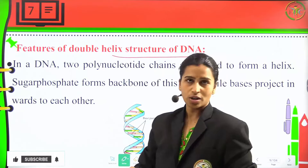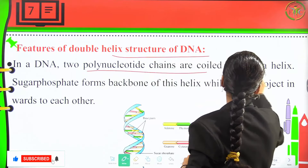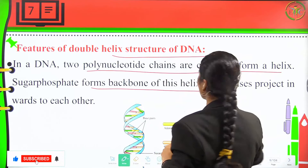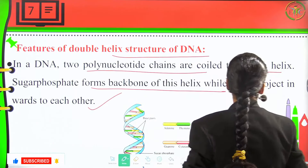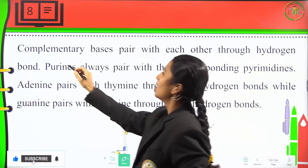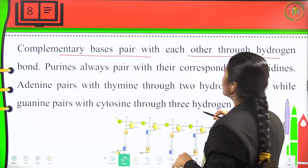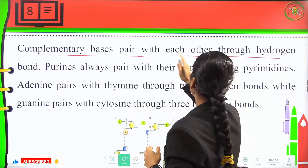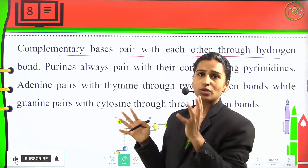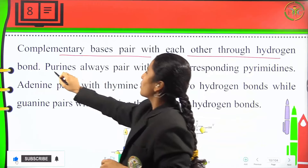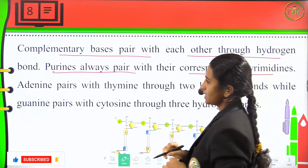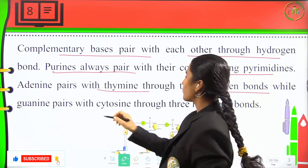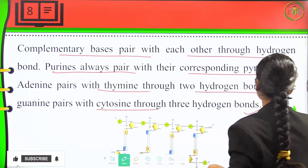Features of the double helix structure: in DNA, two polynucleotide chains are coiled to form a helix. The sugar-phosphate backbone forms the helix while bases project inwards toward each other. Complementary base pairs form through hydrogen bonds. Purines always pair with their corresponding pyrimidines — adenine pairs with thymine through two hydrogen bonds, while guanine pairs with cytosine through three hydrogen bonds.